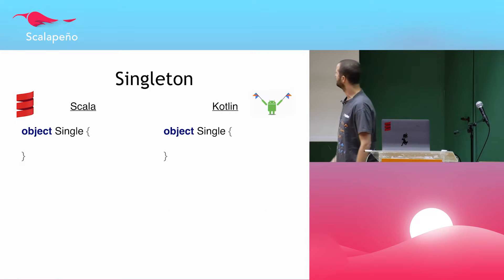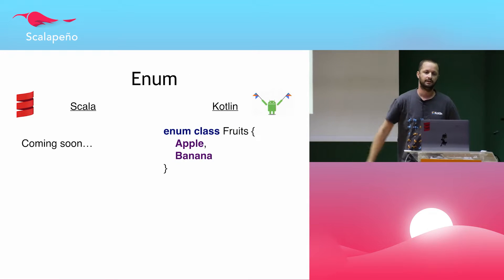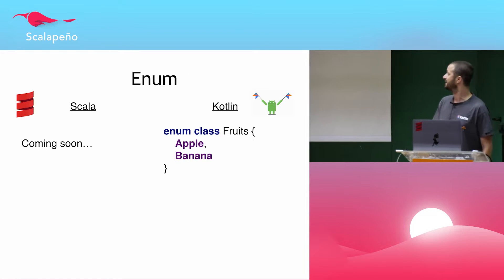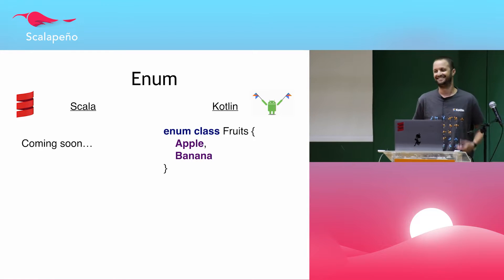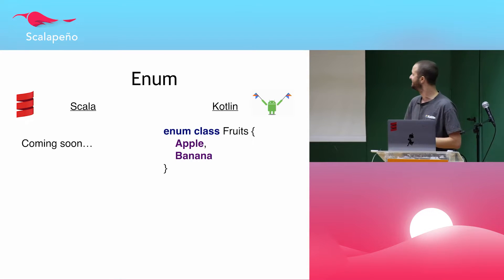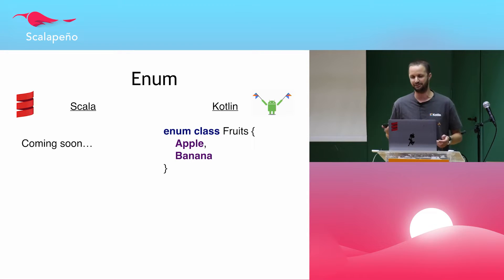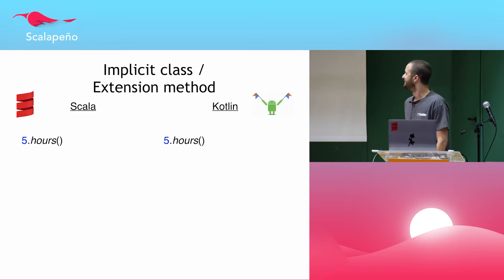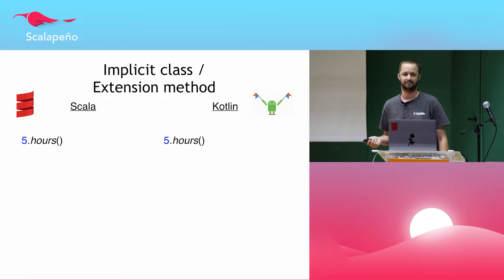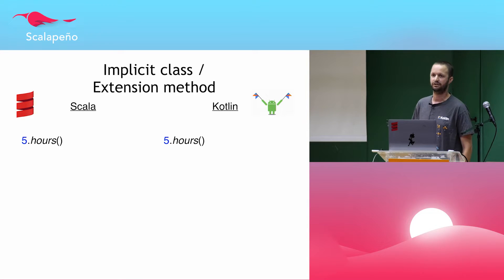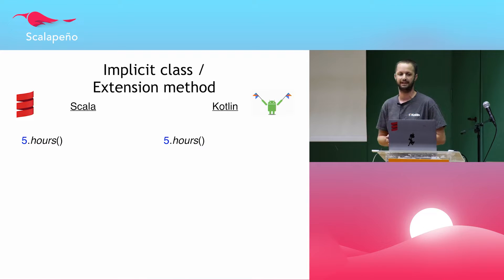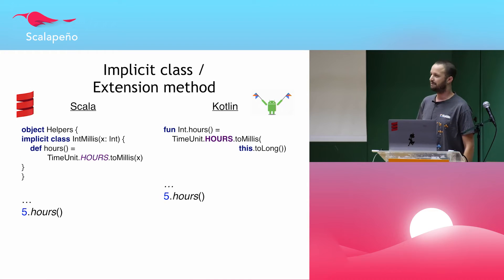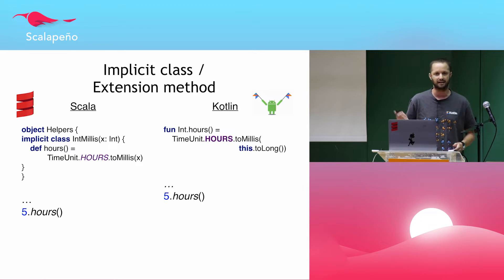Next is singleton — you can see it's pretty much exactly the same. And the next one is enum — I heard enums are coming soon to Scala, and I hope so. In Kotlin I use enums a lot and they're pretty nice. Next is the implicit class. Kotlin has better marketing — they call it extension methods, while Scala uses the word 'implicit' all over the place for other things, which is confusing for beginners. But the usage is pretty much the same, and the implementation is quite similar — I think a little bit nicer in Kotlin, but it's not a killer feature.